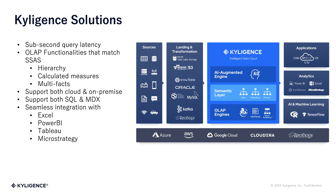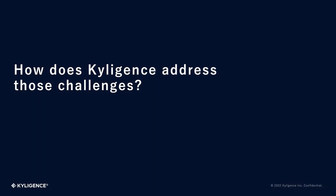Kyligence can be deployed both on-premise and on the cloud — we support Azure, AWS, and GCP. As an OLAP tool on big data, Kyligence provides rich OLAP functionalities that match SSAS, including hierarchy and calculated measures. Users can easily explore data from different levels in a hierarchy by rolling up and drilling down without any limit. Kyligence speaks both SQL and MDX languages. Calculated measures defined in SSAS with MDX expressions can be easily migrated to Kyligence MDX. We also support cross-facts analysis, which is required in many business scenarios.